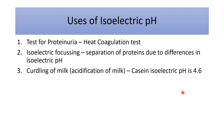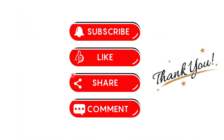The uses of isoelectric pH include: first, the heat coagulation test, which detects whether proteins are present in the urine (proteinuria). Second, isoelectric focusing, a technique for separation of proteins based on differences in isoelectric pH. Third, the curdling of milk — when we acidify milk, the casein protein present in the milk reaches its isoelectric pH and curdling takes place.